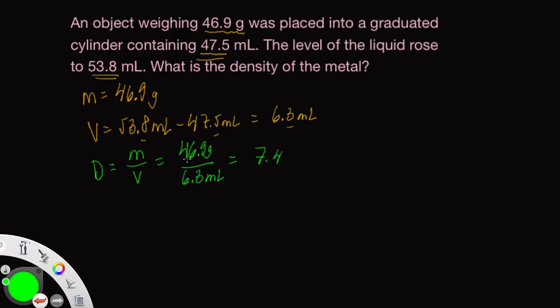And what we want to do is round this off to the least number of sig figs. Here we have two sig figs, and here we have three, so we want to round this off to just two sig figs, so we would write 7.4, and our units would be grams per milliliters.